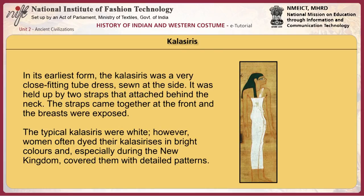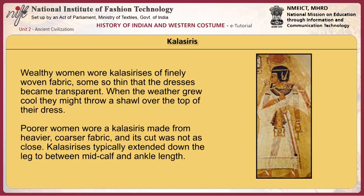In its earliest form, the kalasiri was a very close-fitting tube dress sewn at the side, held up by two straps that attached behind the neck. The straps came together at the front and the breasts were exposed. The typical kalasiri was white; however, women often dyed their kalasiris in bright colors and especially during the New Kingdom covered them with detailed patterns. Wealthy women wore kalasiris of finely woven fabric, some so thin that the dresses became transparent. When the weather grew cold, they might throw a shawl over the top of their dress. Poorer women wore a kalasiri made from heavier, coarser fabric, and it typically extended from mid-calf to ankle length.